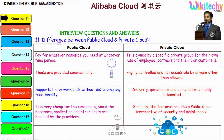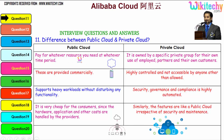So here is the question: the difference between the public cloud and the private cloud. Public cloud is like viewing a film in a cinema theatre, whereas viewing a film at home using a DVD is your private cloud. You pay for whatever resource you need at whatever time period. The private cloud is owned by a specific private group for their own use, for employees, partners, and their own customers.